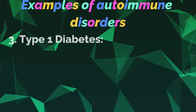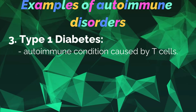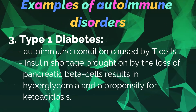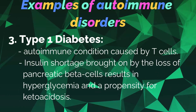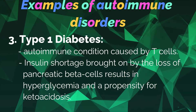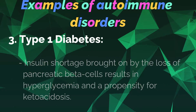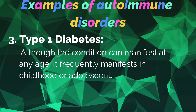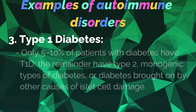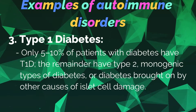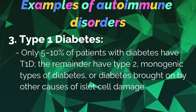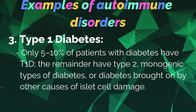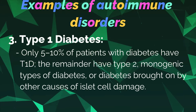Number three: Type 1 diabetes. It is an autoimmune condition caused by T cells. Insulin shortage brought on by the loss of pancreatic beta cells results in hyperglycemia and a propensity for ketoacidosis. Although the condition can manifest at any age, it frequently manifests in childhood or adolescence. Only 5–10% of patients with diabetes have type 1 diabetes; the remainder have type 2, monogenic types, or diabetes brought on by other causes of isolated cell damage.